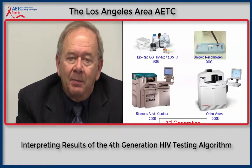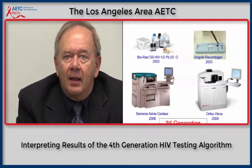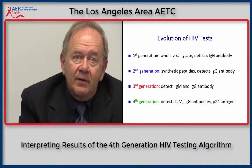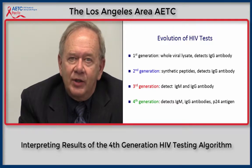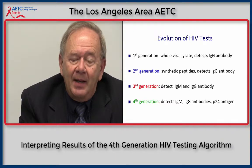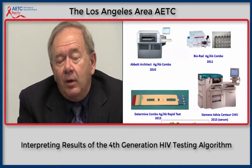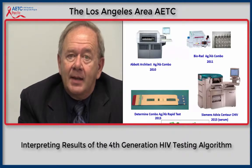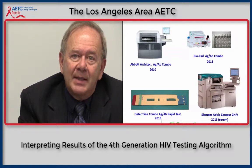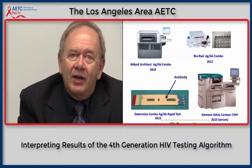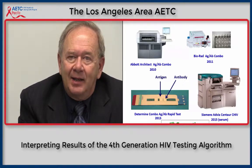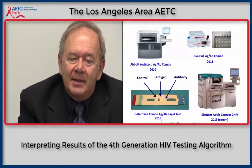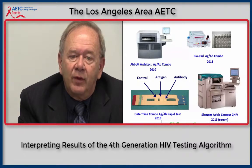Two other multi-platform analyzers — the Siemens Advia Centaur and the Ortho Vitros — can be used for third-generation testing. The fourth-generation is the most recent development, first approved by the FDA in 2010. It detects IgM antibodies, IgG antibodies, and also P-24 antigen. The four currently FDA-approved fourth-generation tests include the Abbott Architect, the Bio-Rad Antigen Antibody Combo Assay, the Determine Rapid Test, and the most recently approved Siemens Advia Centaur chemiluminescent assay in 2015, approved for use with serum specimens. The Determine Rapid Test can detect separately HIV antibody in one location, P-24 antigen in the second location, as well as the internal control.